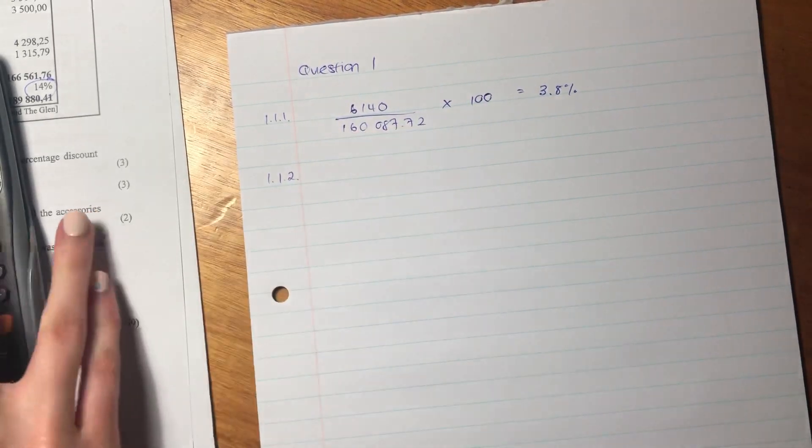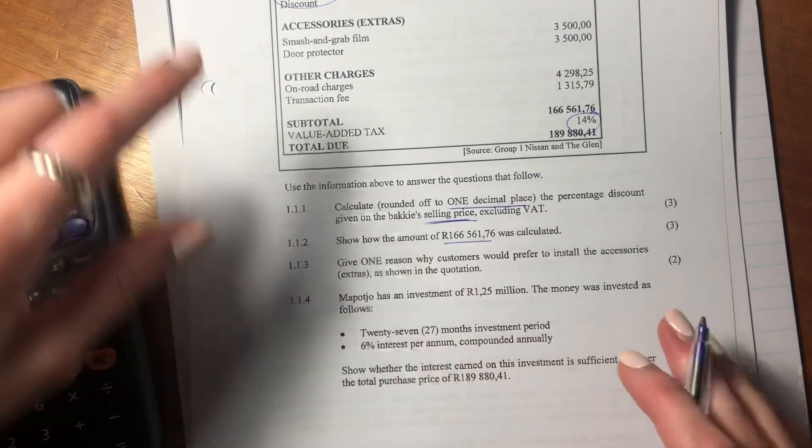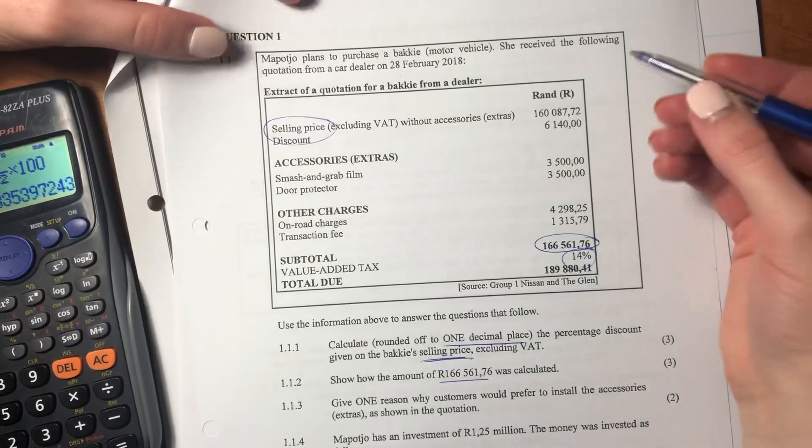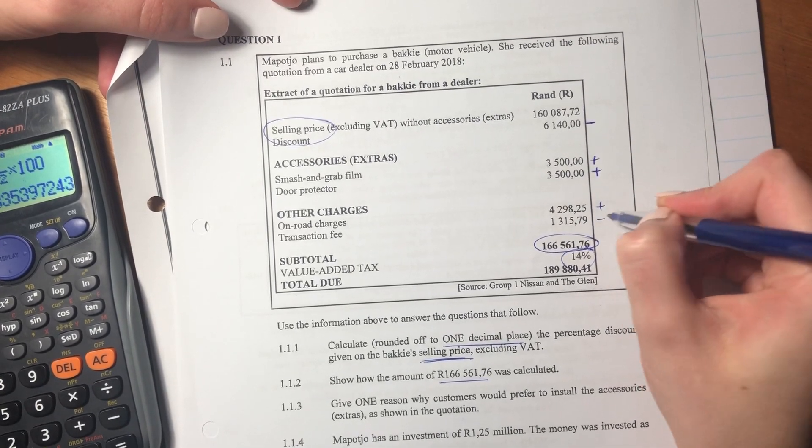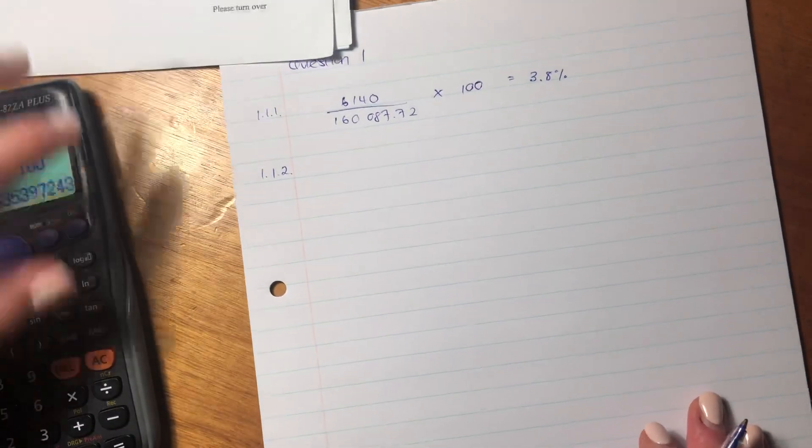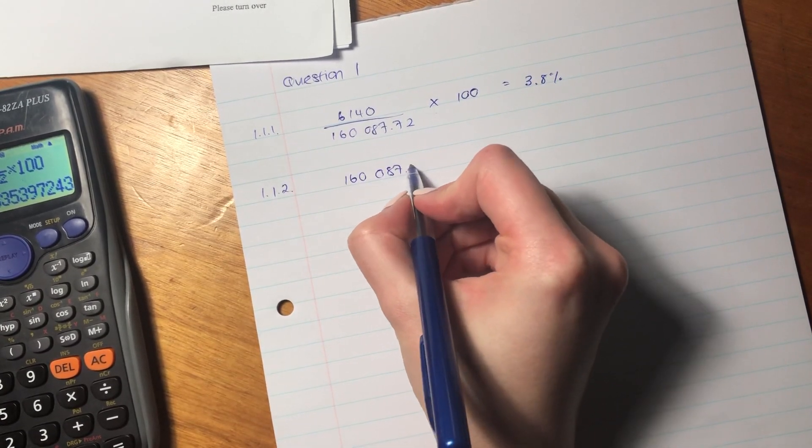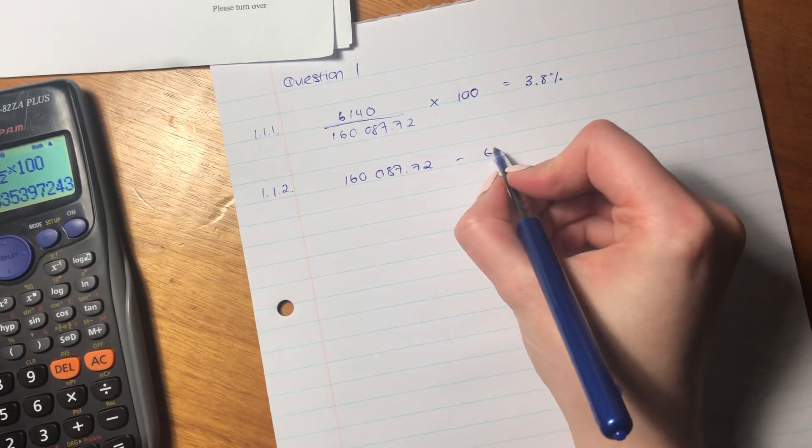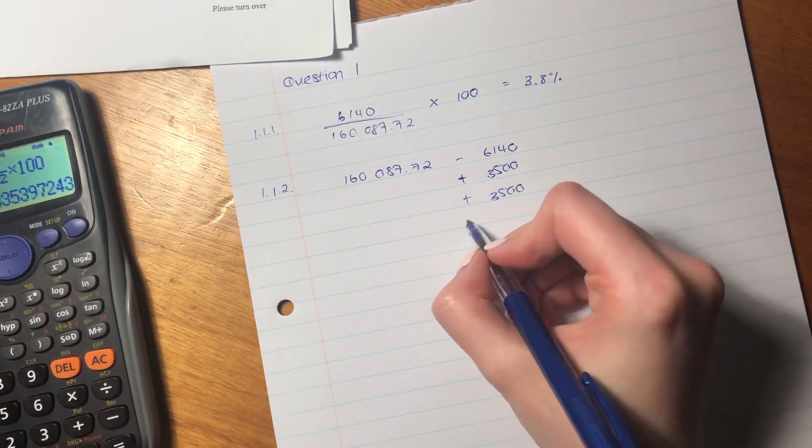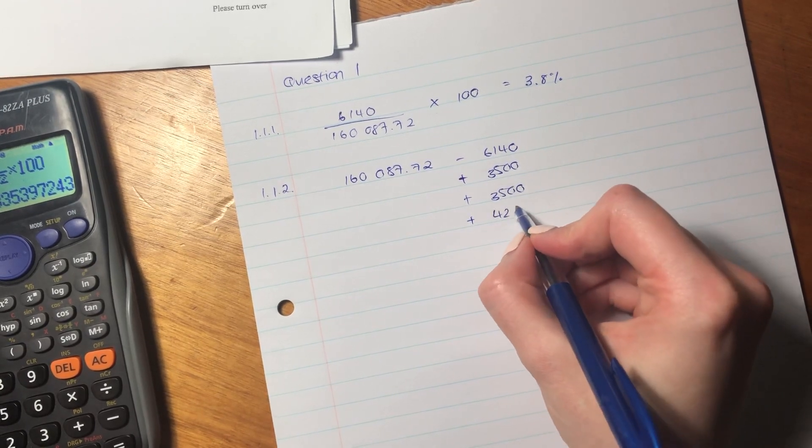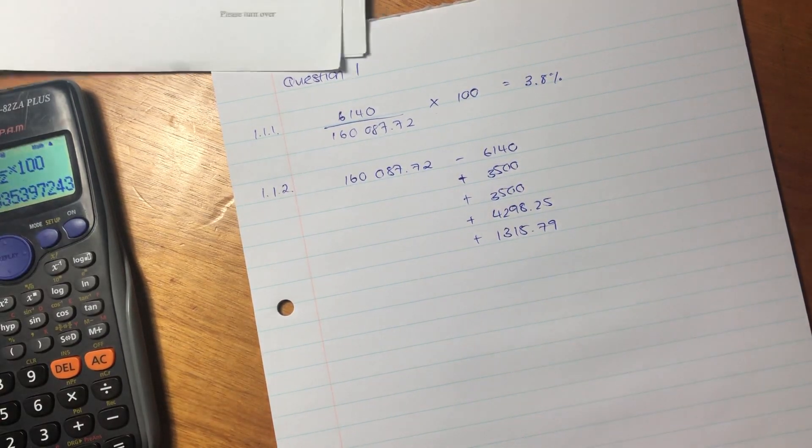Let's now go to the next question. The next question says show how this amount was calculated. So from what we should see, it should be this minus this amount plus this amount plus this amount plus this amount and plus this amount. So let's write it down. 160087.72, then we're going to subtract off the discount, then we're going to add on the smash and grab, add on the door protector, add on the on-the-road charges - I'm not 100% sure what that is, but it's an additional charge - and the transactional cost.